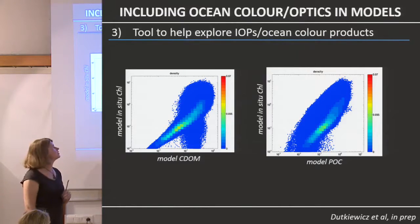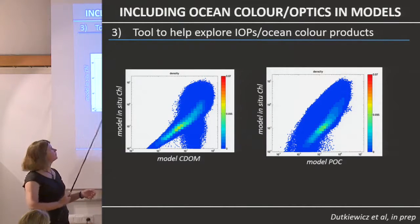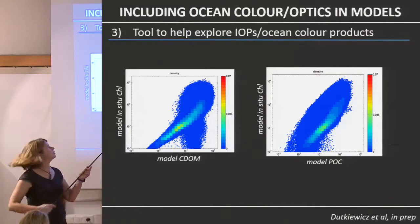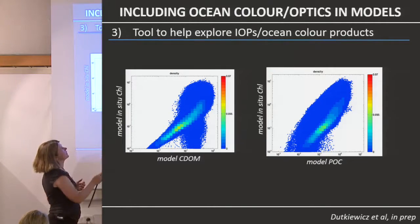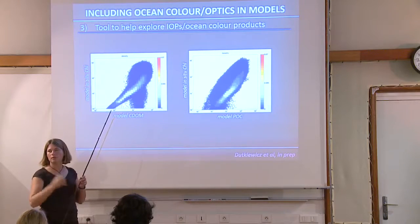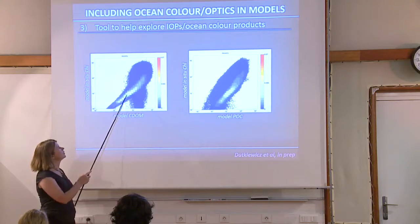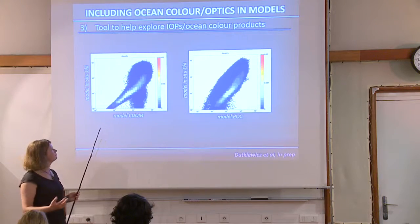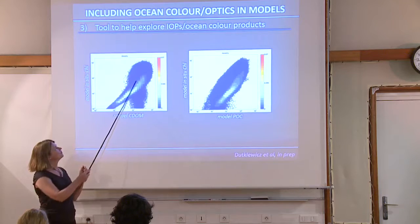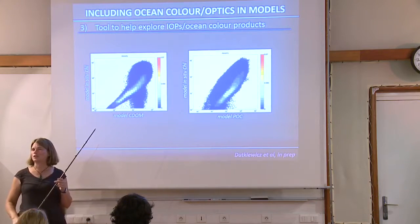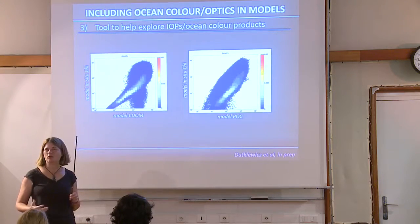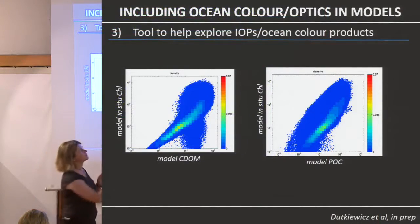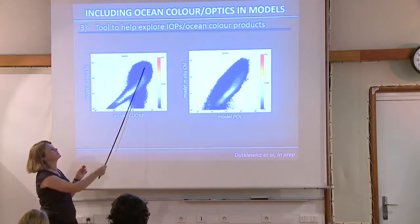Here are plots of model in-situ chlorophyll against model CDOM and model POC — a density plot, so 7% means about 7% of all grid cells fall in that spot. Everyone knows this, but it's an illustration that there are a lot of other optical constituents which will change how the water responds, and that's why a chlorophyll algorithm won't work perfectly. There is a nice general correspondence, but there are huge clouds of points that make physical sense.